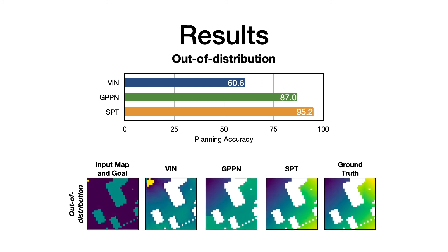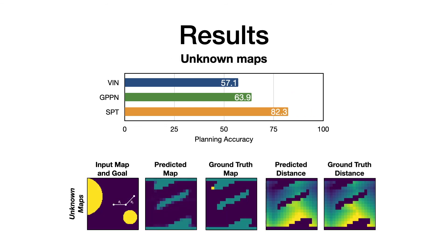Similarly, the SPT model also outperforms both the baselines for out-of-distribution test sets too. When we move to unknown maps, the performance improvement of SPT over the baseline increases.